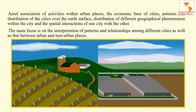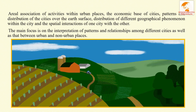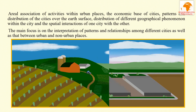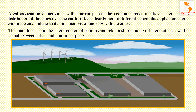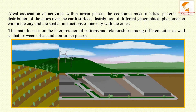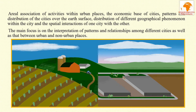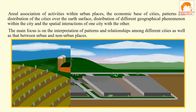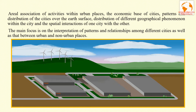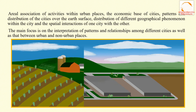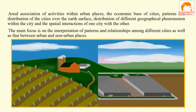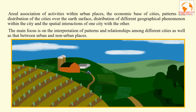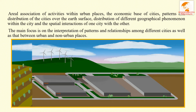Over the period of time, the scope of urban geography has extended and now basically includes the area association of activities within the urban place, the economic base of cities, pattern and distribution of cities over the earth's surface, distribution of different geographical phenomena within the city, and the spatial interaction of cities with one another.